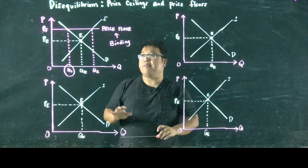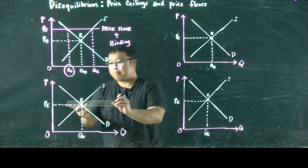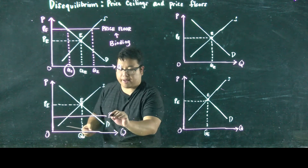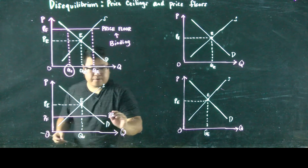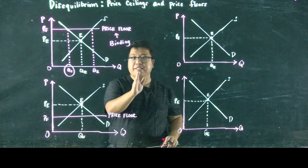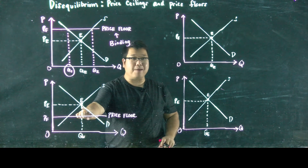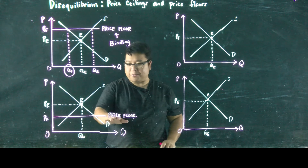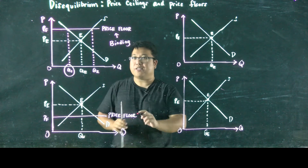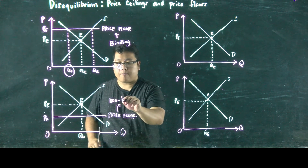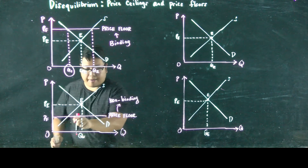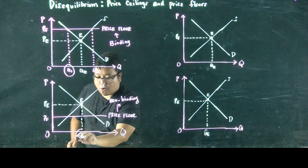Now let's say instead that this price floor was set below PE. In other words, the lowest permissible price in this market is PF, set below PE. Since the lowest permissible price is PF, the market can still achieve PE because it is still allowed under the rules — it's perfectly legal to charge PE. Therefore, this is what we call a non-binding price floor. The actual quantity exchanged in this case is QE.